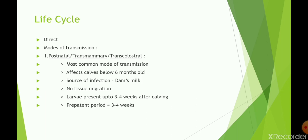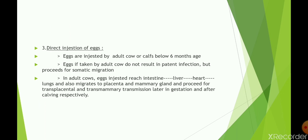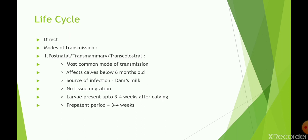The life cycle is direct — there is no intermediate host involved. There are three modes of transmission: first, postnatal or transmammary or transcolostral; second, prenatal or transplacental; and third, direct ingestion of eggs. The postnatal or transmammary route is the most common mode of transmission.